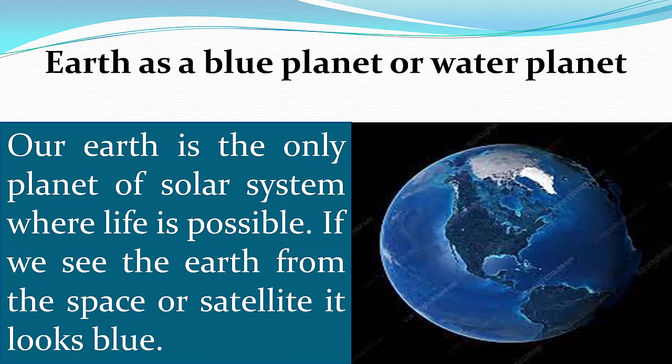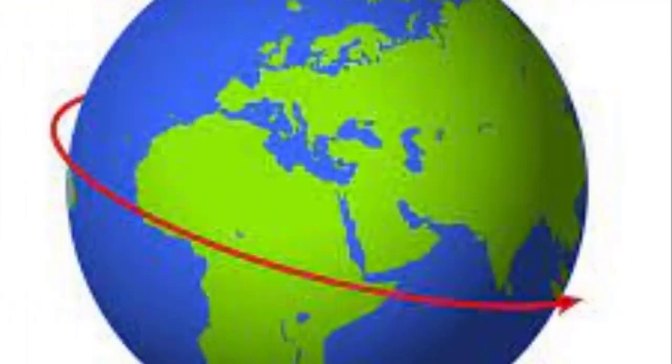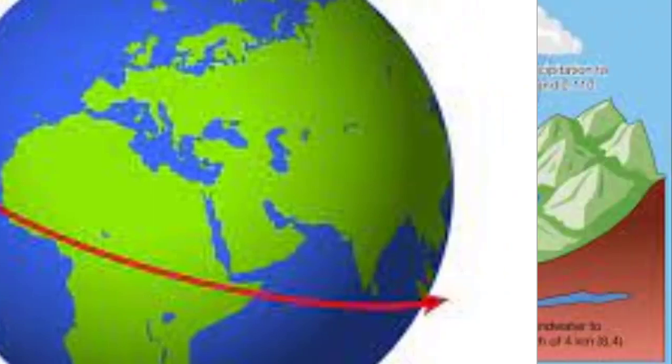The answer is very simple. The surface of the Earth is divided into two major portions: land portion and water portion. Land portion covers 29 percent of the Earth's surface while water portion covers 71 percent. This is the reason why our Earth looks blue and is called the blue planet or water planet. On the world map and globe, the water portion is shown by blue color.